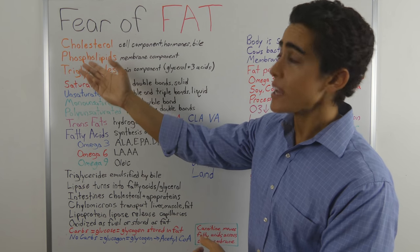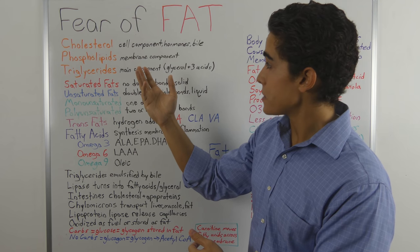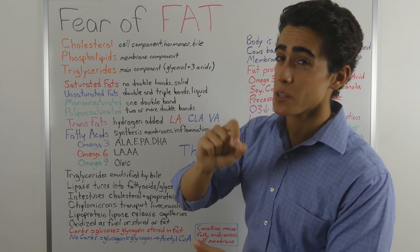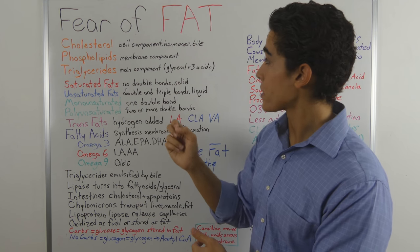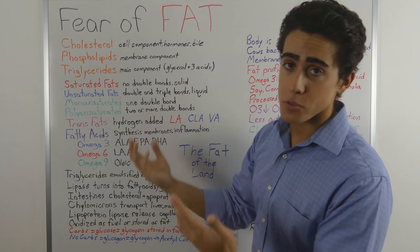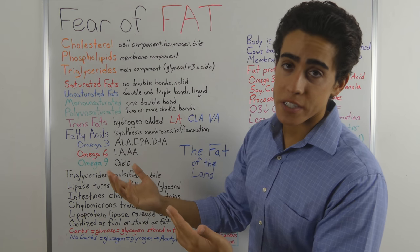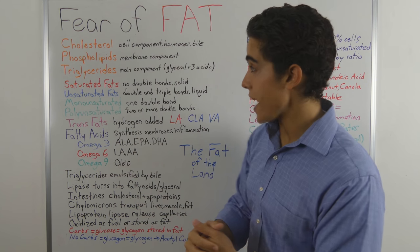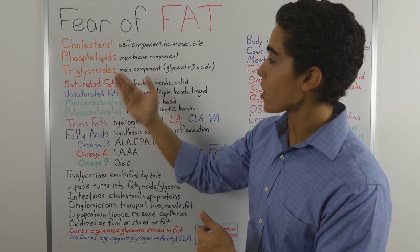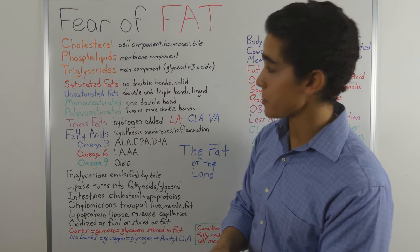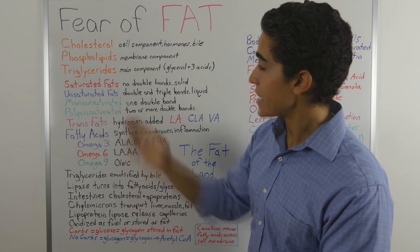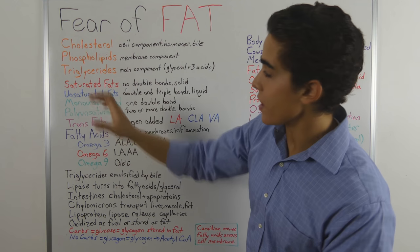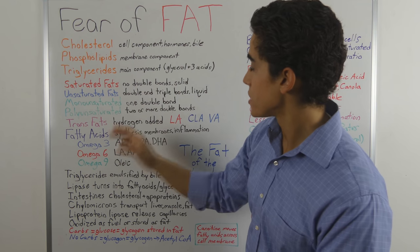Cholesterol is in every single cell in our body. It's a precursor to just about every hormone and it is needed to produce bile, which is required to absorb fat. Phospholipids are a cell membrane component, and triglycerides are actually the main component of these fats.